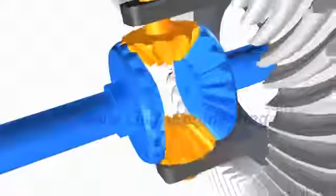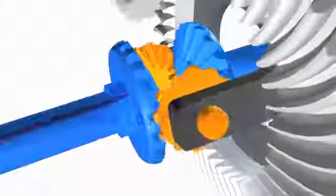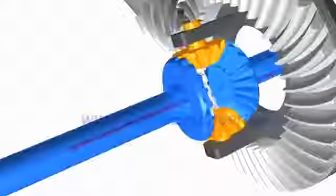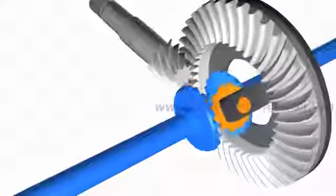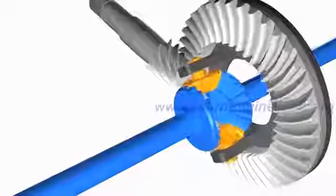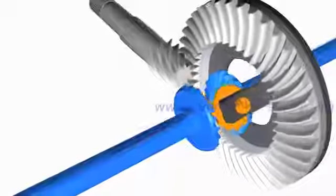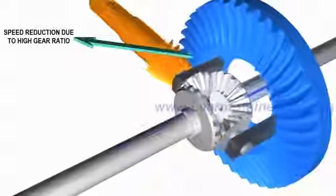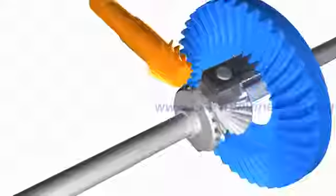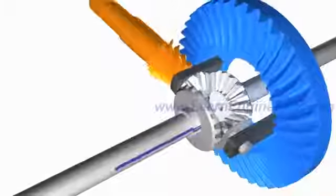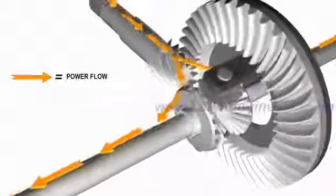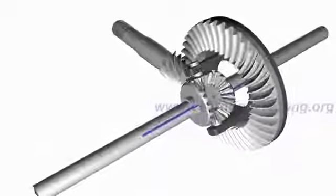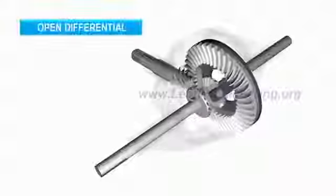Apart from allowing wheels to rotate at different RPM, differential has got two more functions. First is speed reduction at pinion ring gear assembly. This will result in torque multiplication. The other function is to turn the power flow direction by 90 degrees.